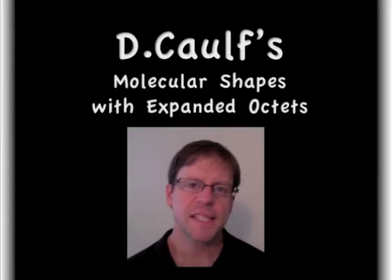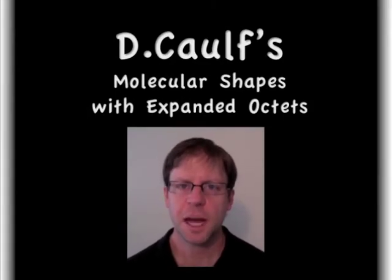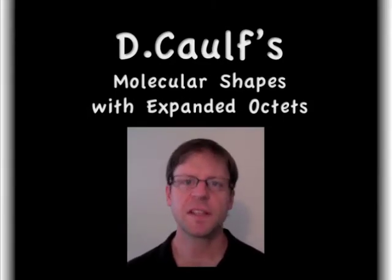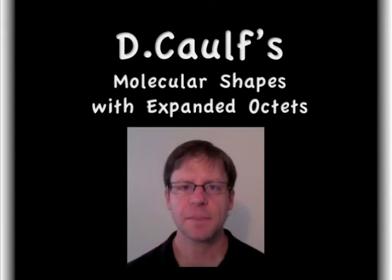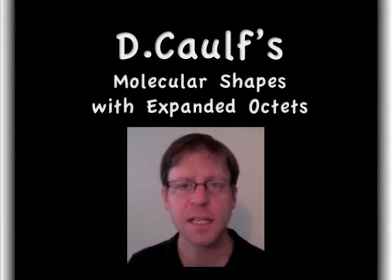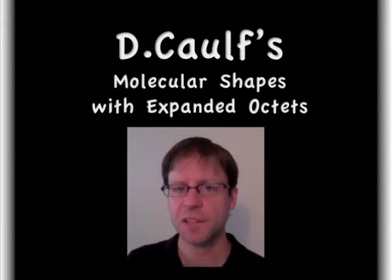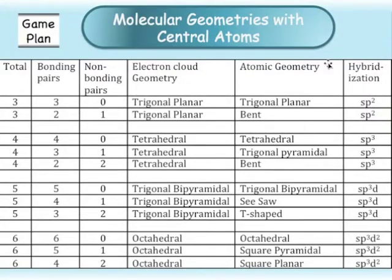This is the second installment of molecular geometries. This time I'm specifically going to talk about atoms that have expanded octets, getting into some of the more interesting geometries. In the first video I covered the basics with sp2 or sp3 hybridizations on the central atom, and in this one I'm going to include situations where we incorporate the d orbitals into the hybridization — meaning we are looking at expanded octets.